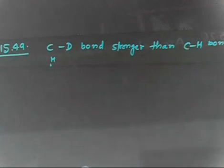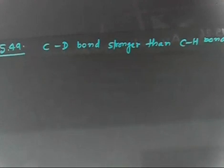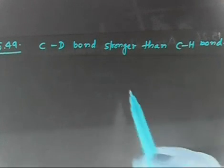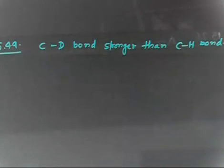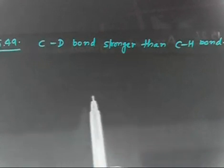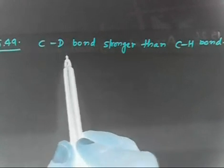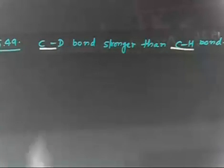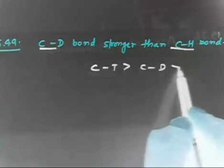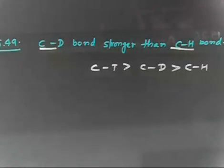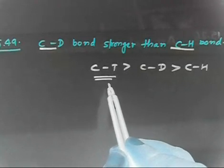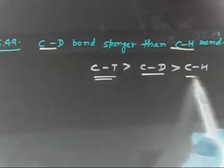Let us discuss the next problem. This is quite interesting. Everybody knows the carbon-deuterium bond, that is the CD bond. The CD bond is stronger than the CH bond — this is an experimental fact. Carbon-tritium is the strongest, then carbon-deuterium, and then carbon-hydrogen. So the highest bond energy order is C-T > C-D > C-H.